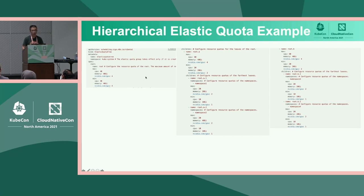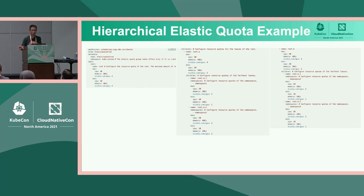Here is an example extending the previous one. To define a quota group, a user can specify the minimum and maximum, but there is also an additional field called 'children' — it's a nested structure. Each quota group can specify child quota groups, and each child defines its own minimum and maximum. Children can also have their own children.